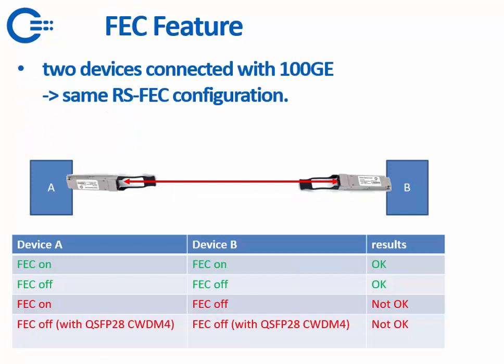How does FEC function in practice? When two devices connect at 100 Gigabit, they both need the same RS-FEC configuration. For example, in a communication from device A to device B on 100 Gigabit, if FEC is on on device A and on on device B, you will have a link.